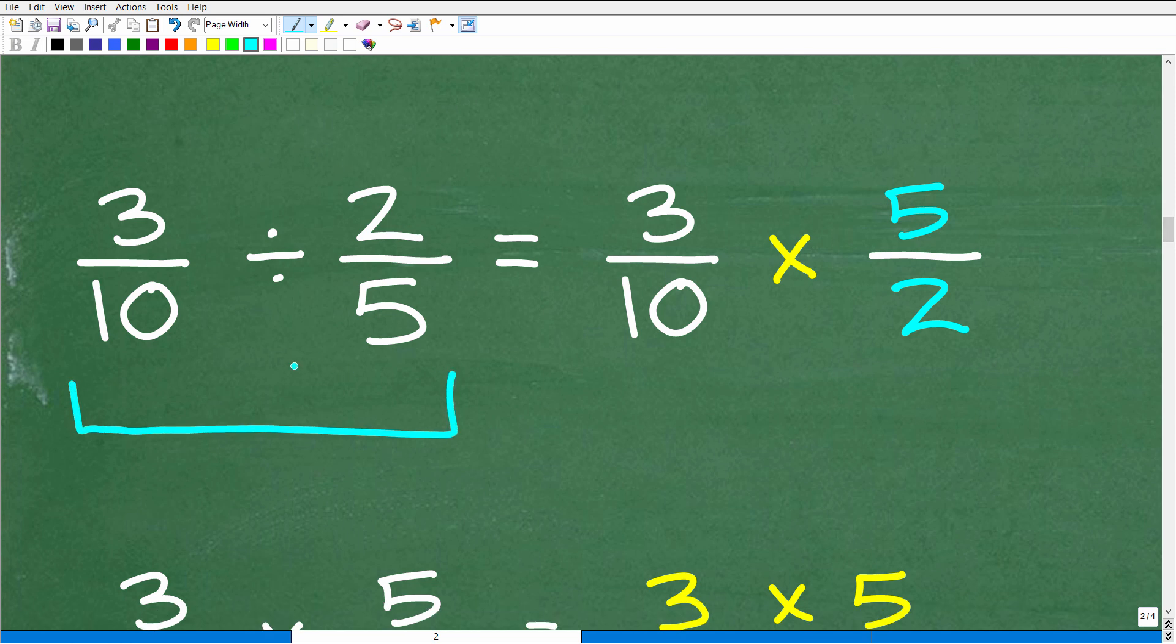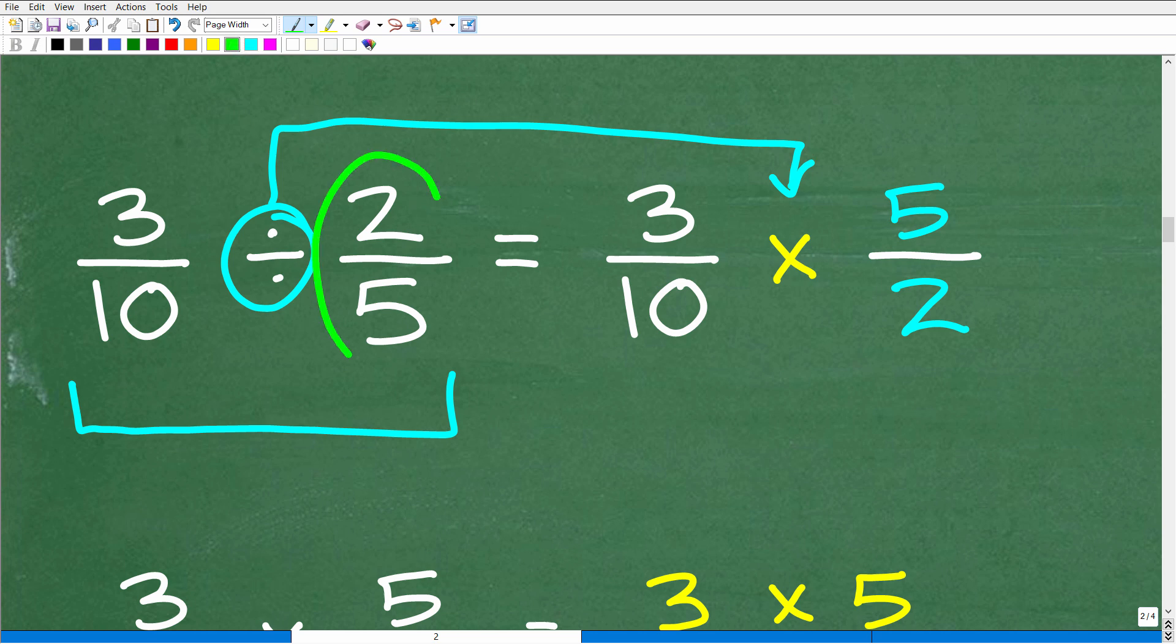Okay, so here we have 3 tenths divided by 2 fifths. So this is a division problem right here. What we're going to do is change this into multiplication, okay? So how do we do that? Well, what we do is we take the fraction to the right of the division symbol. So here's the division symbol. This is the fraction to the right and we're going to flip it upside down, okay? That's called the reciprocal. So here we have 2 fifths. We're going to flip it upside down. That's 5 over 2, okay?